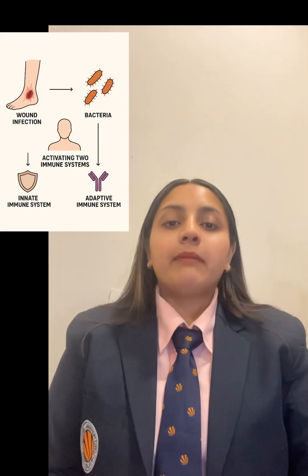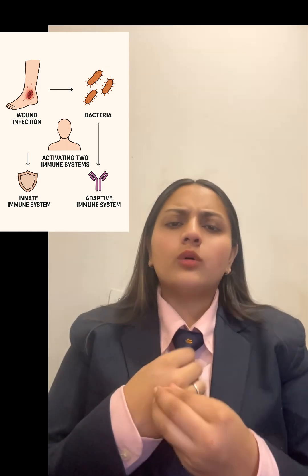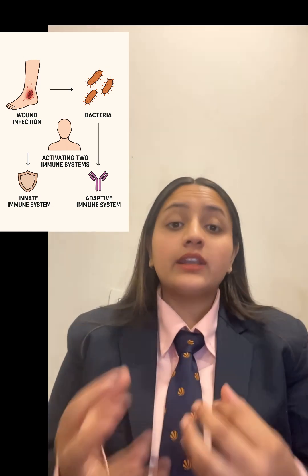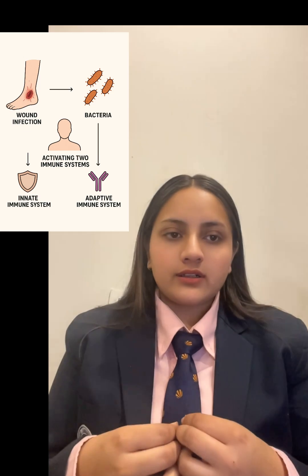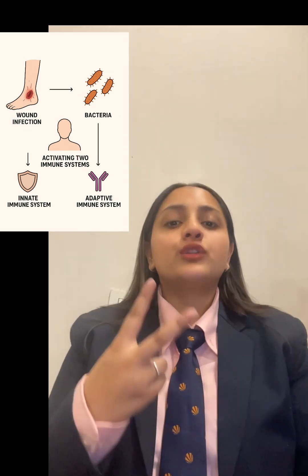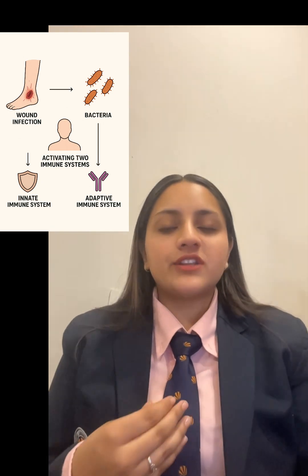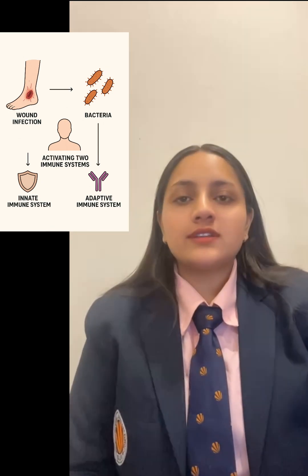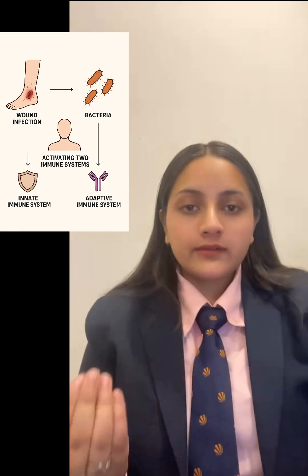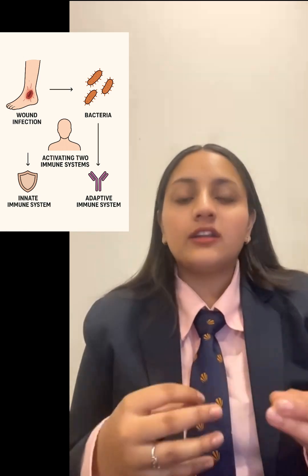In this case, the patient is diagnosed with a bacterial infection. When bacteria enters into the body through a wound or a tissue injury, the body detects it quickly as a foreign invader. This activates two different systems: first, the innate immune system which acts immediately, and then the adaptive immune system which responds later but develops a specific and long-lasting response. Together they coordinate to eliminate the infection and protect our body.